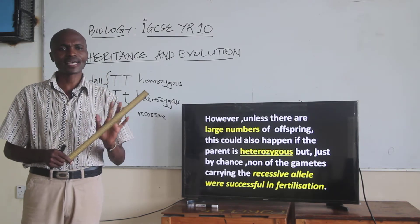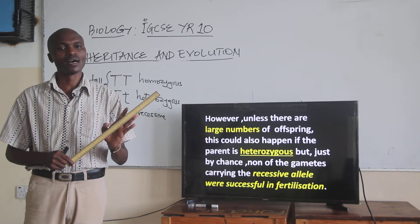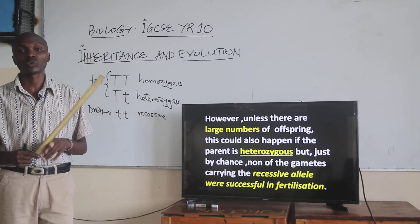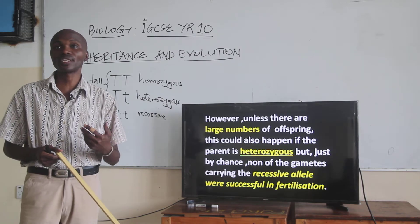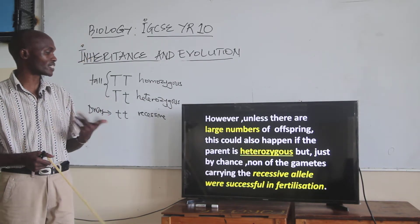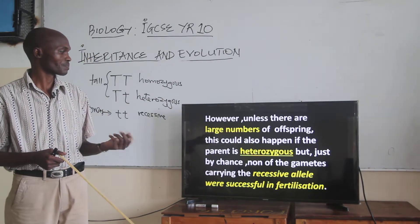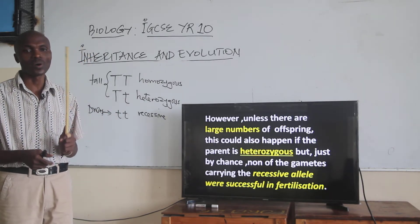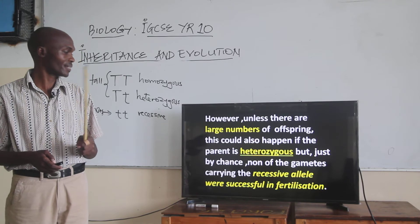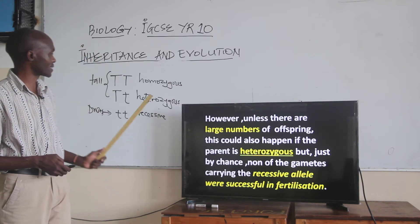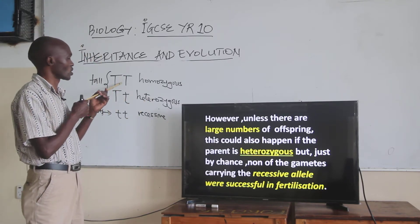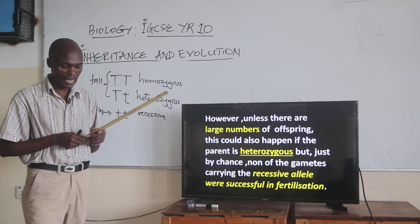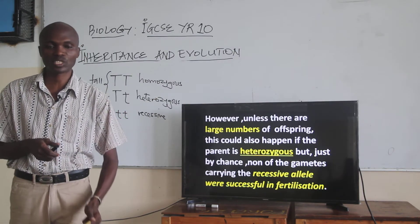However, unless there are large numbers of the young ones, this could also happen if the parent is actually heterozygous. But by chance, none of the gametes carrying the recessive allele was successful in fertilization. So basically, when you cross a tall variety and a short variety, you are likely to have any of those scenarios that we've just explained.